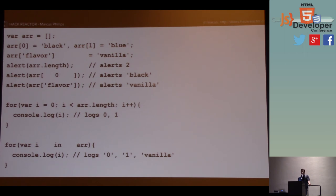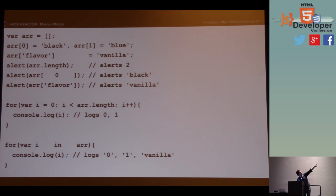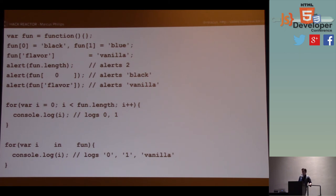Let's switch this up so it's not an array, it's a function. What do you think has changed? Functions don't have the same length property — remember that length was magical. Let's assume for a moment that functions don't have an interesting length property, so 'function.length' should alert undefined. Regardless of whether it's undefined or zero, we're not going to walk across the elements contained within that function in the same way.